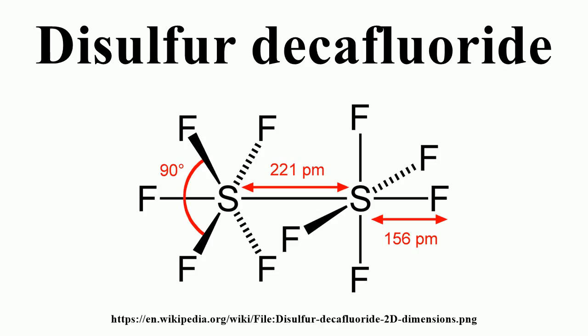Disulfur decafluoride is a colorless gas or liquid with a sulfur dioxide-like odor. It is about four times as poisonous as phosgene. Its toxicity is thought to be caused by its disproportionation in the lungs into SF6, which is inert, and SF4, which reacts with moisture to form sulfurous acid and hydrofluoric acid.